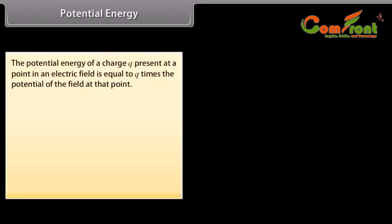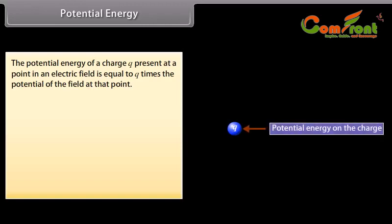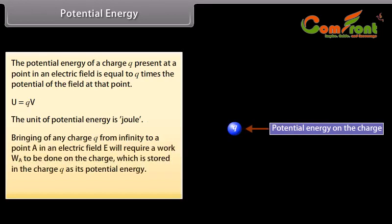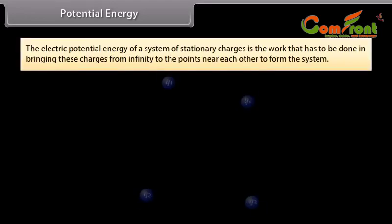Potential energy. The potential energy of a charge Q present at a point in an electric field is equal to Q times the potential of the field at that point: U equals QV. The unit of potential energy is joule. Bringing any charge Q from infinity to a point A in an electric field E will require work WA to be done on the charge, which is stored in the charge Q as its potential energy: UA equals QVA. The electric potential energy of a system of stationary charges is the work that has to be done in bringing these charges from infinity to the points near each other to form the system.